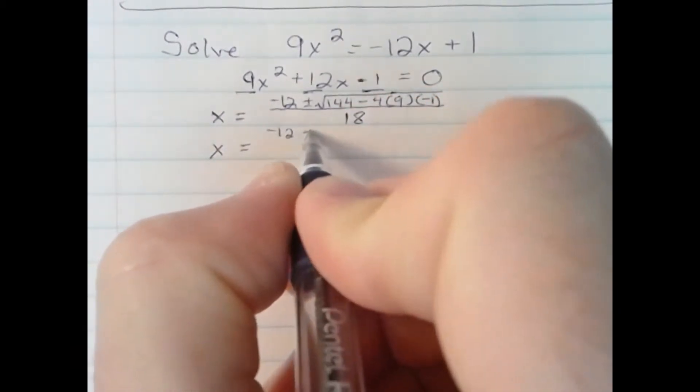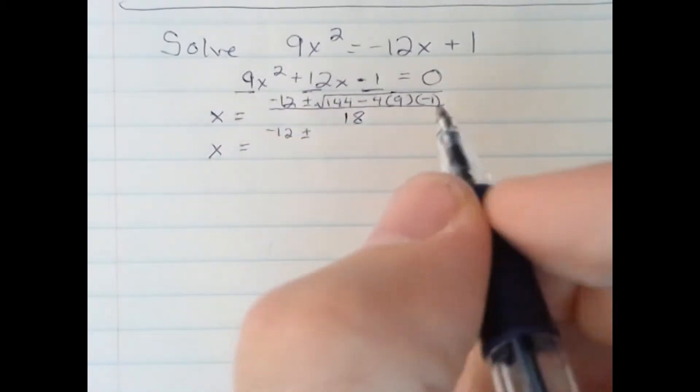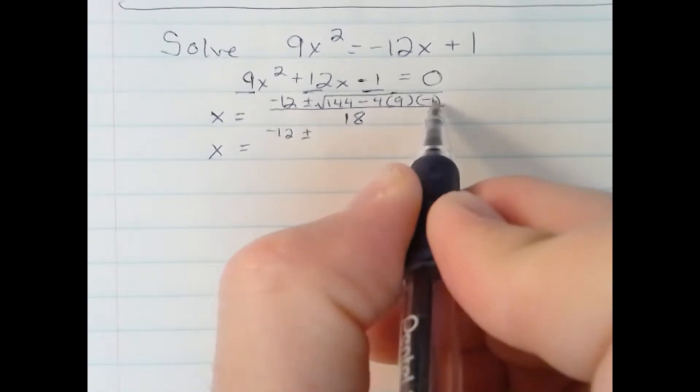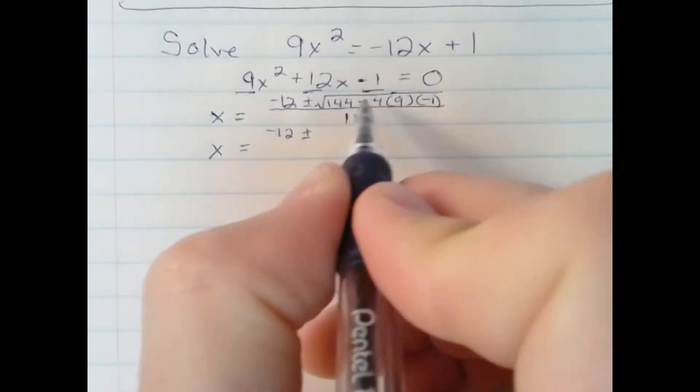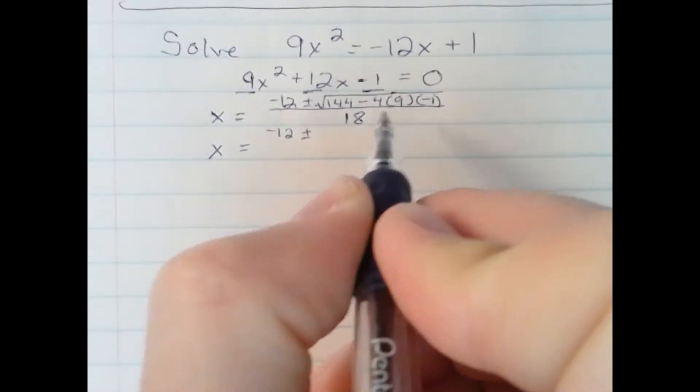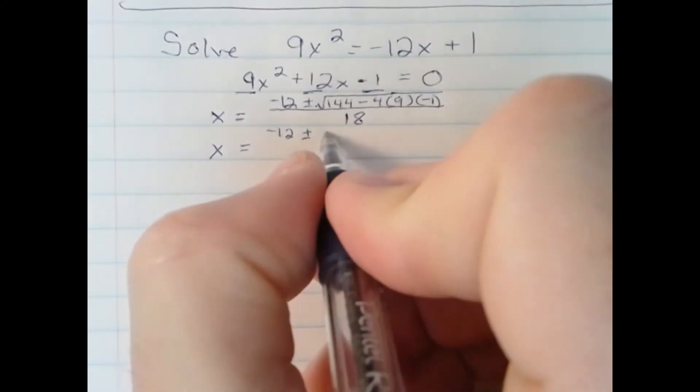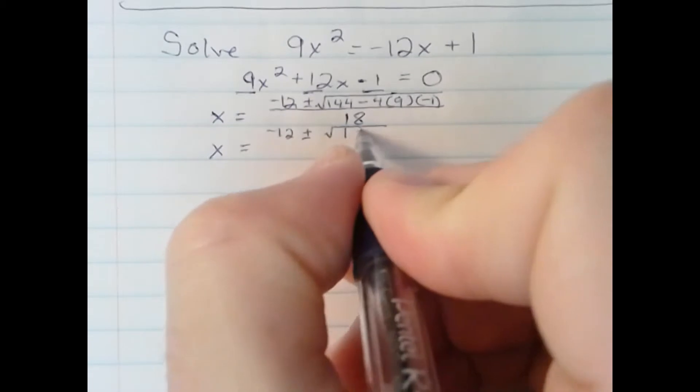Negative 12 plus or minus 4 times 9 is 36. 36 times negative 1 is negative 36. 144 minus a negative 36 is the same thing as 144 plus 36, which simplifies to 180.